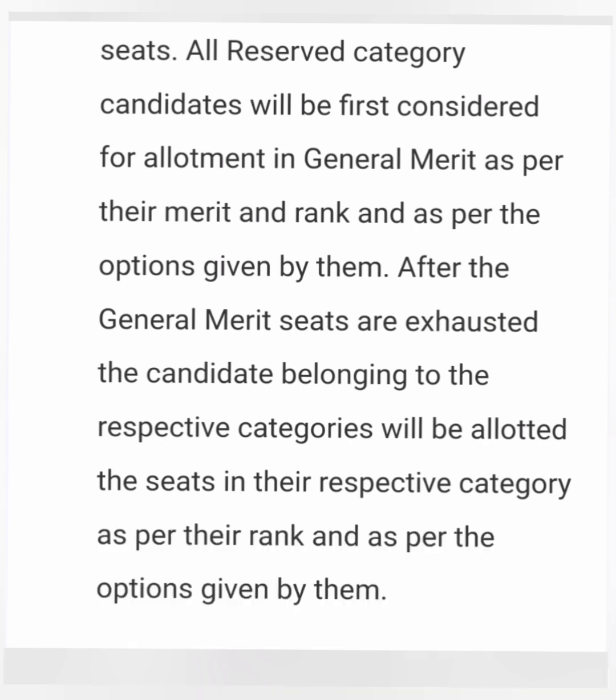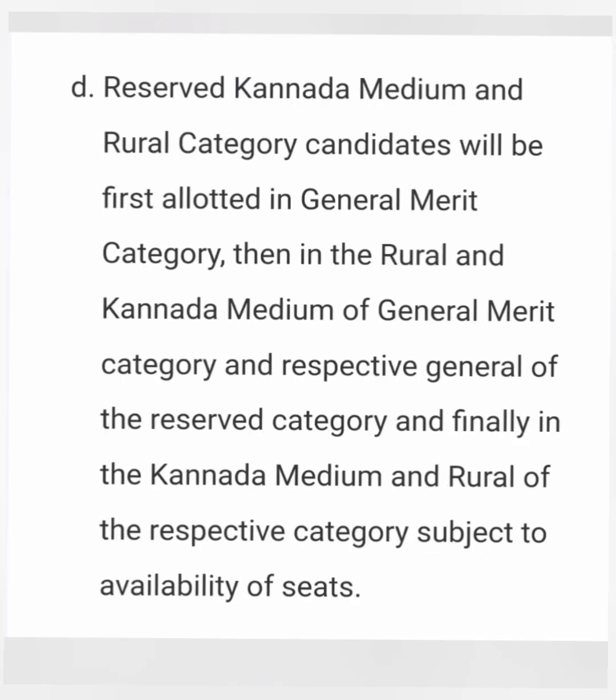Point D covers Kannada medium students and rural category candidates. For both these categories, the first allotment check is also based on their rank in the general merit category. If they get a seat in general merit, they are allotted there. If not — which is more likely — they will then be checked under their rural or Kannada medium category, and a seat will be allocated if available.